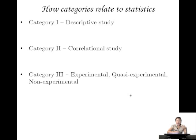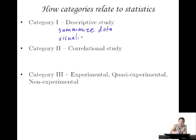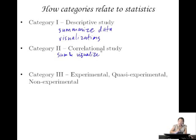Let's summarize how categories are related to statistics. In category one — descriptive studies — usually all you can do is summarize data or visualize it using things like histograms and box plots. In correlational studies, you can also summarize and visualize, but now you could also analyze your data with regressions and find correlations.